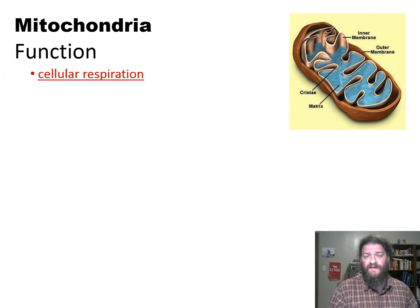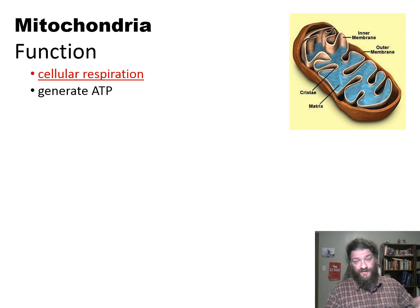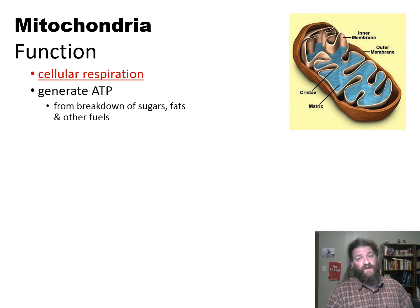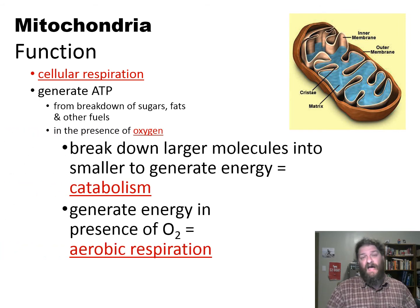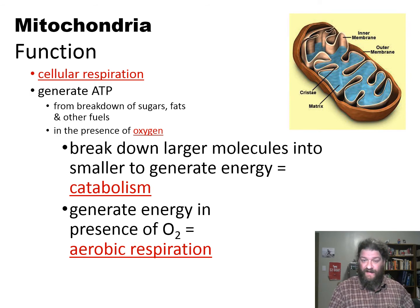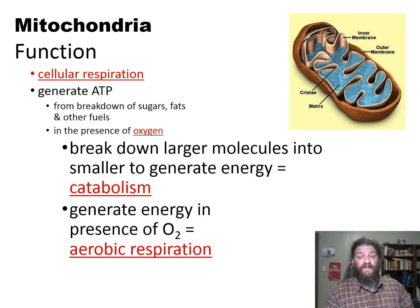Looking a little closer at the mitochondria — again, the powerhouse of the cell — we need to associate it with cellular respiration and generating ATP. As we're going to find out, cellular respiration actually starts in the cytoplasm, so we do make some ATP without the mitochondrion. But really, the mitochondria generate most of the ATP from the breakdown of sugars, and not just sugars but other fuels like fats. This takes place in the presence of oxygen — mitochondria are aerobic; they only really work if oxygen is available. They use the process of catabolism, breaking down larger molecules to transfer that energy to ATP. Since this is done in the process of oxygen, it is called aerobic.